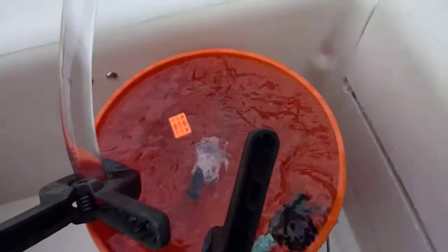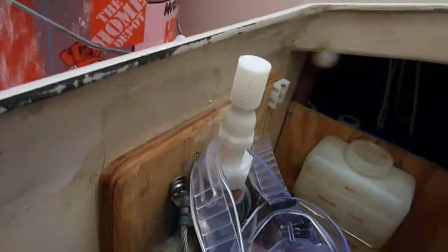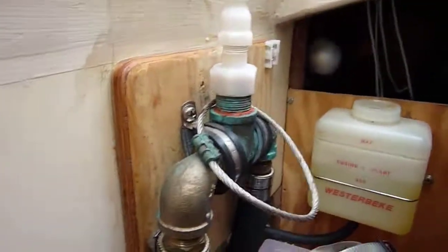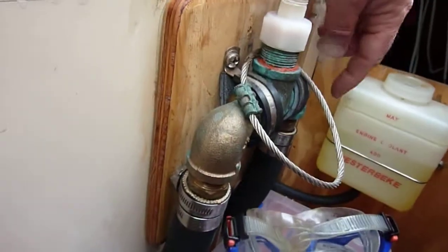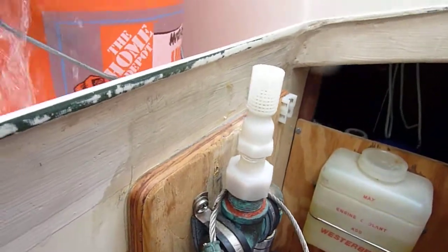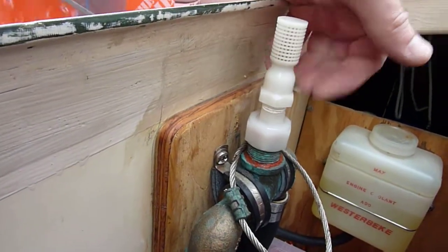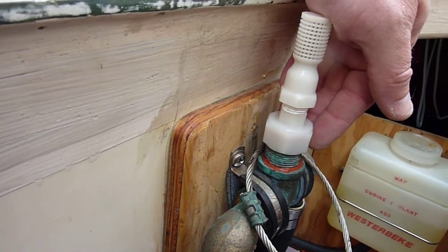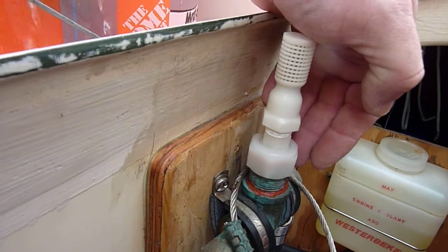One of the key things you want to be careful of when running an in-out bucket is the siphon brake for your engine. Mine is right here. This goes off to the muffler water injection elbow. When you shut off the engine, this allows air to break the vacuum so you can't siphon and fill the exhaust and flood the engine.